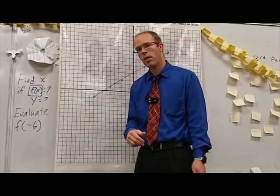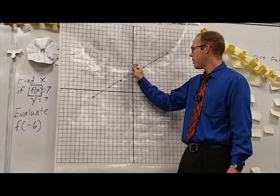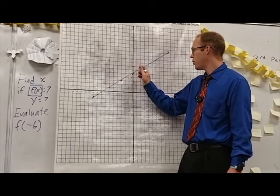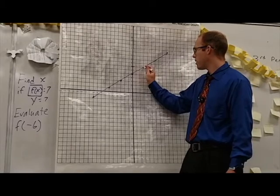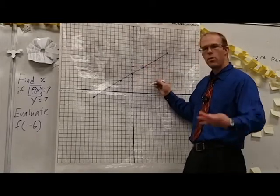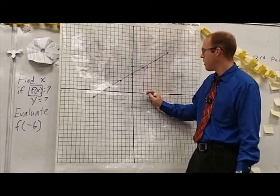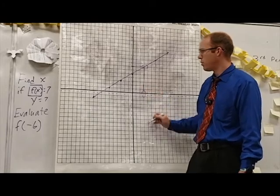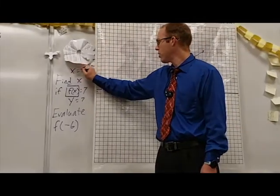So we're supposed to find x if our y value equals 7. Let's come to the graph. Our y value of 7 is corresponding to right there. Let's find where that is on the graph, that's over here on the right side. So that's this point right here at that location. We need to find our x value from that point, so let's go down here to our x axis and we see that our x value is 3. So the answer to this question is x equals 3.